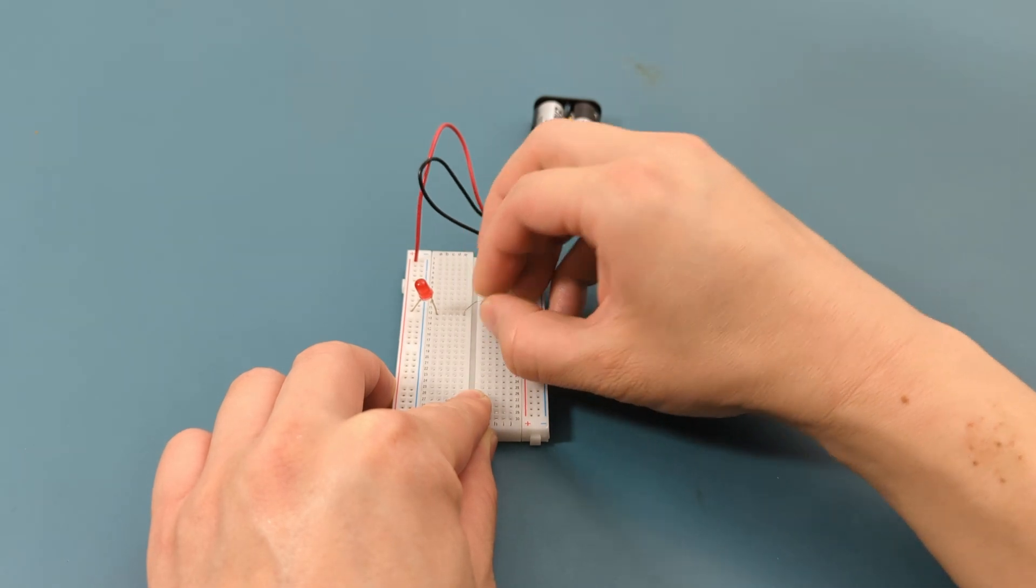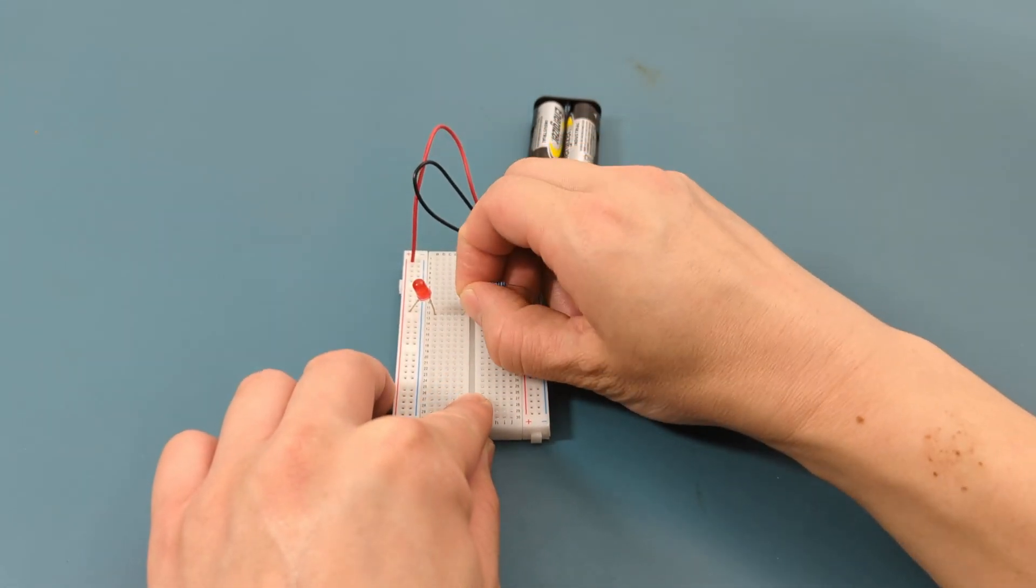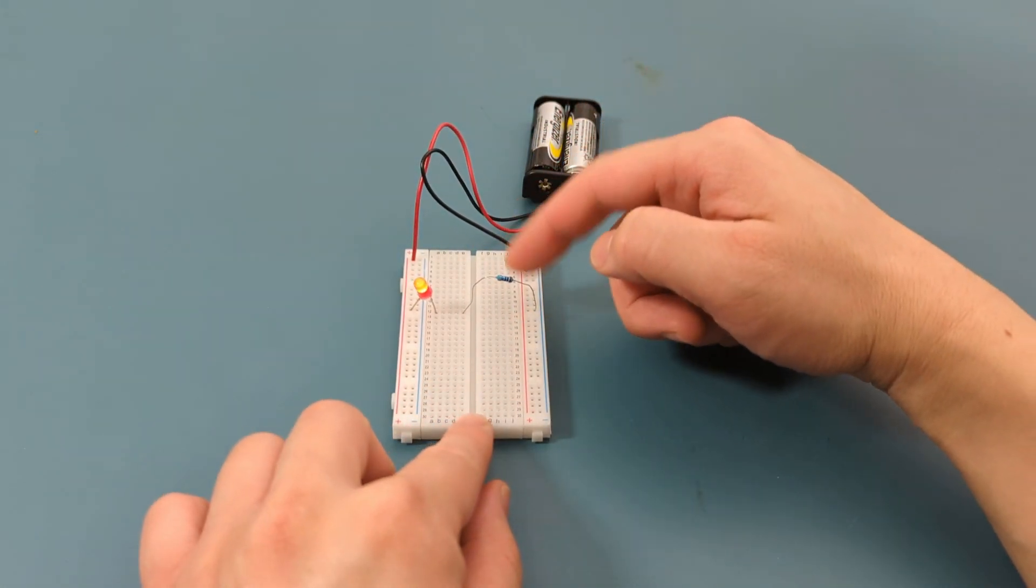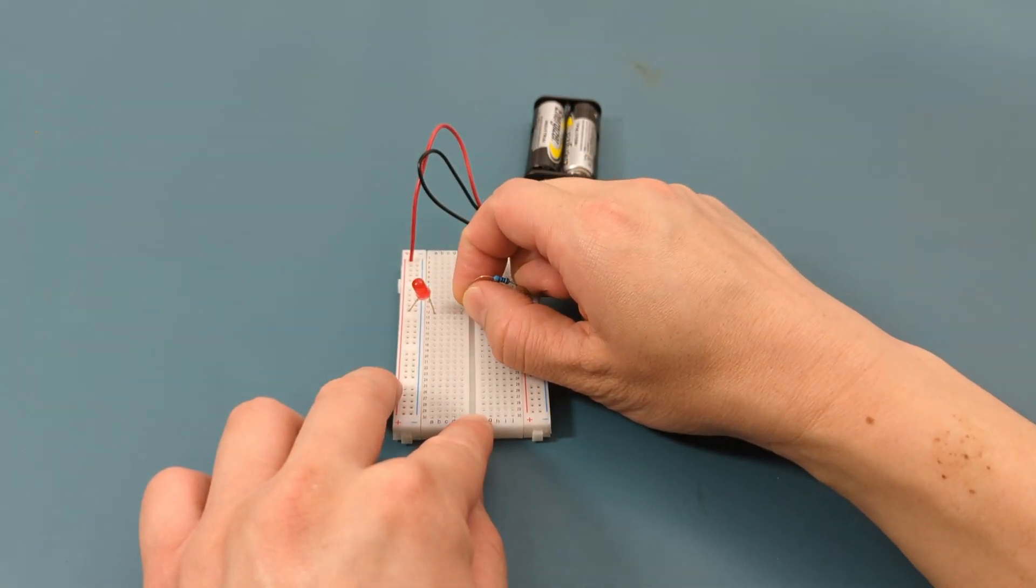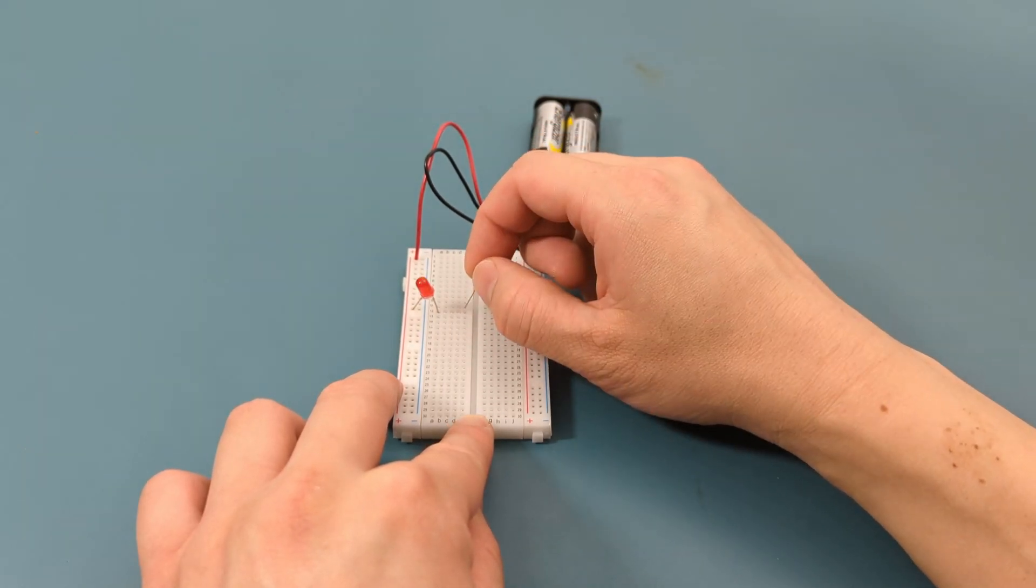I'm going to slightly insert the resistor into the breadboard. Since the wire isn't pushed in all the way, it does not make a good connection. So the LED turns on and off. When inserting your component into the breadboard, ensure it's securely in place.